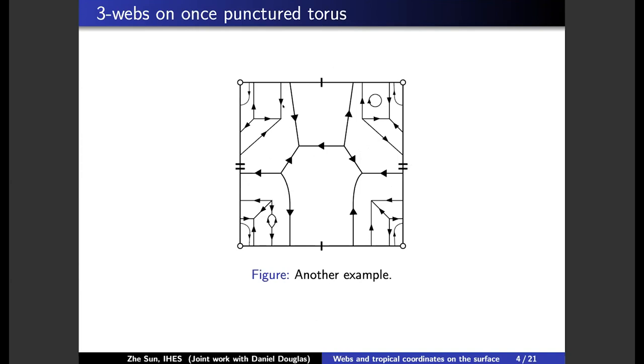So here is another example of webs on the once-punctured torus. You can think of the punctures at the corners and you glue the two sides, two opposite sides together. And you get a torus and puncture at these vertices. And you can see there are circles and there are trivalent graphs.